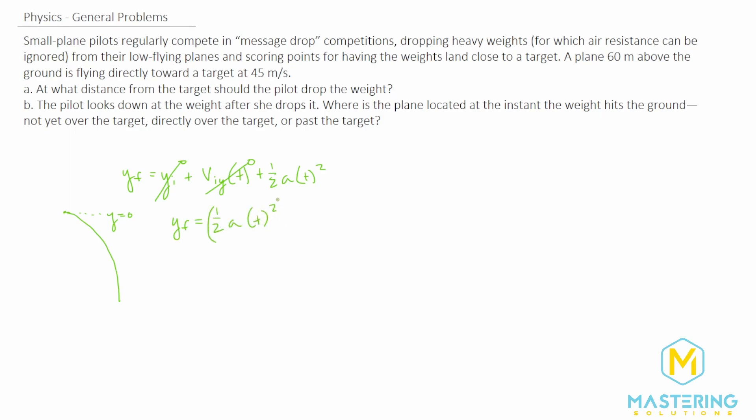We'll multiply both sides of the equation by the reciprocal of one half or two. So two times the y final is equal to acceleration times the time squared. Divide both sides by a. So we have t squared is equal to two y f divided by acceleration. Take the square root and now we have the time equation is equal to the square root of two times the y final divided by acceleration.